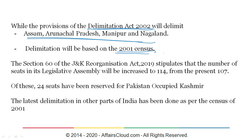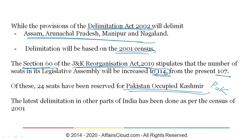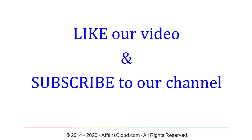Section 60 of the Jammu and Kashmir Reorganization Act of 2019 stipulates that the number of seats in its legislative assembly will be increased from 107 to 114, and out of these, 24 seats have been reserved for Pakistan-occupied Kashmir (POK). Also noteworthy is that the latest delimitation in other parts of India has been carried out as per the census of 2001.